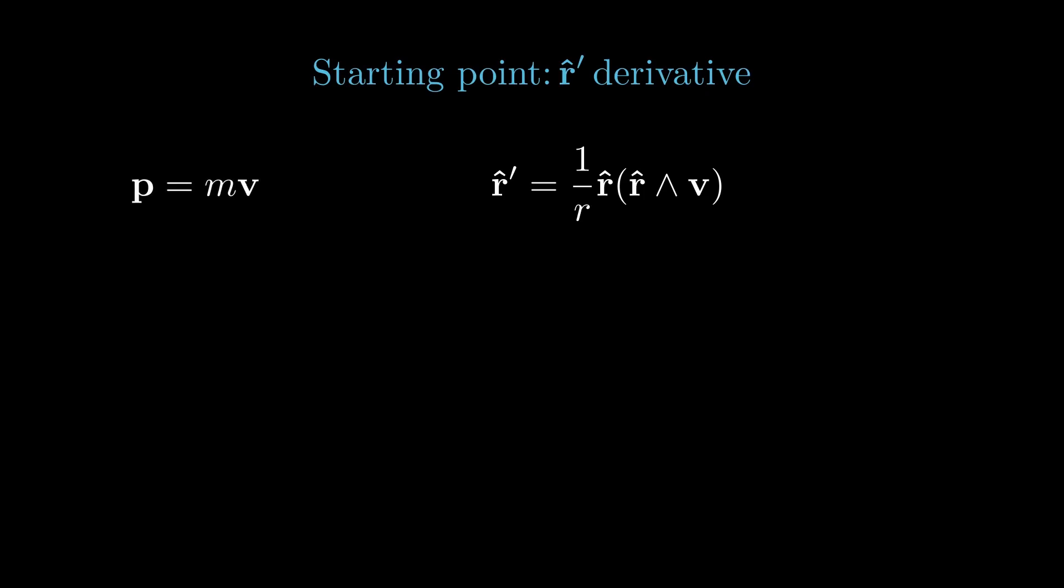We can rewrite this, writing p equals mv for the momentum, x equals r r hat as before, and an angular momentum bivector, l equals x wedge p. This gives us r hat prime equals one over m times r hat over r squared times l.